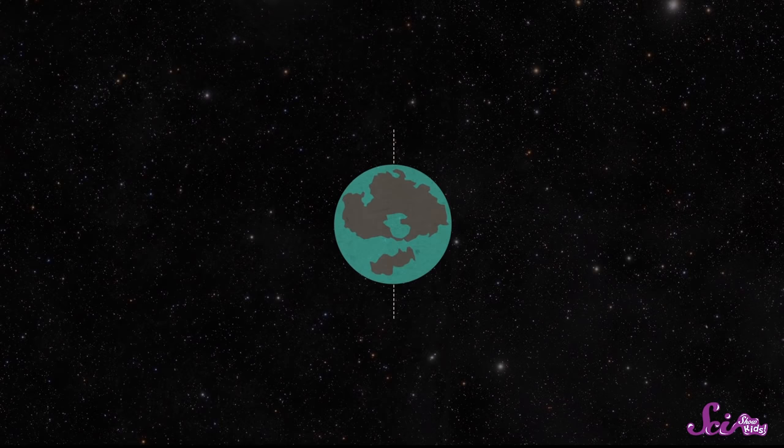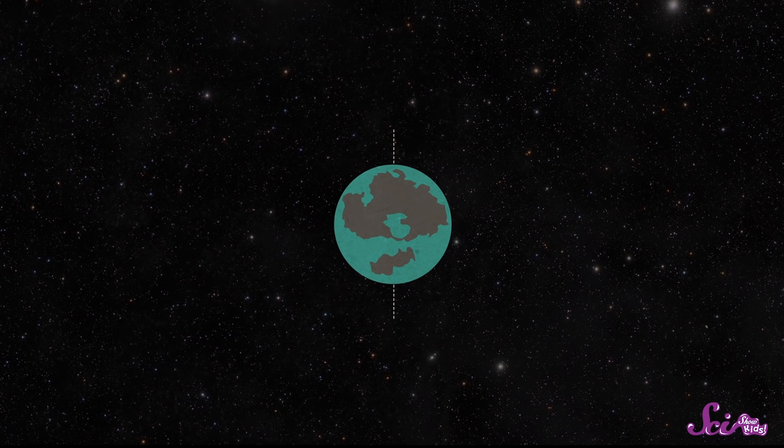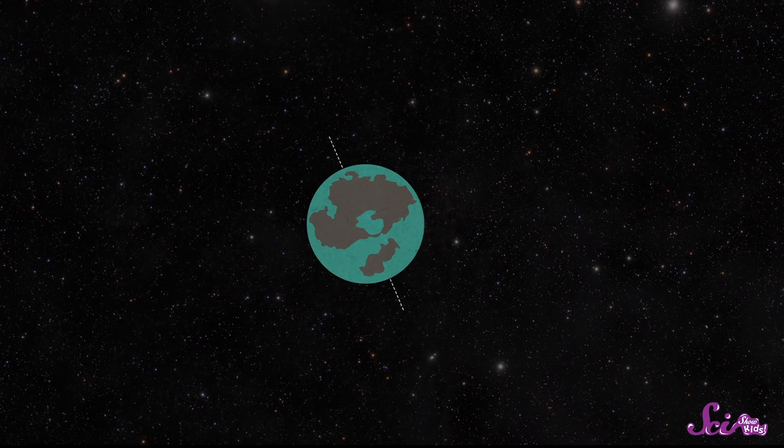A really, really long time ago, billions of years ago, scientists think something big hit the Earth. The impact was so strong that it knocked our planet over a little bit. So now Earth is tilted.